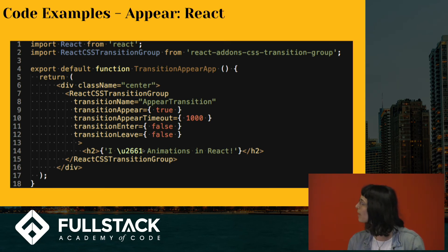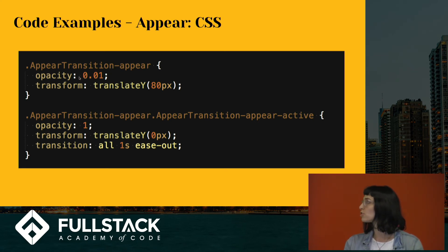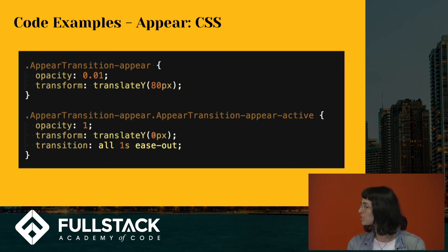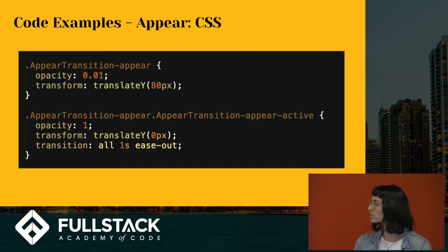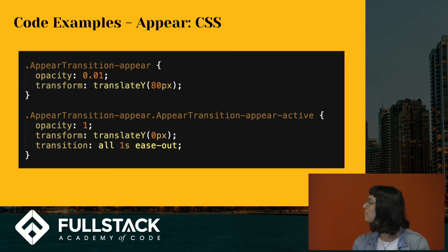What does that code look like? Really easy, actually. There's a React CSS Transition Group component here. You just give it a transition name, which you'll use in the CSS. For 'appear' — the initial load — you initialize that as true and give it a timeout of how long the animation will last, in this case one thousand milliseconds, one second. Enter and leave are set to false because we're only focusing on that initial loading. In the CSS, you have two separate parts: the initial state — opacity very transparent and starting 80 pixels below — and the transition property set to 'all' since two properties are changing, with a one-second ease-out timing.